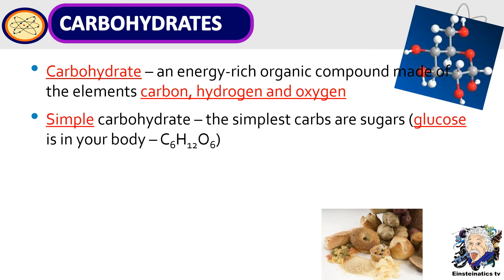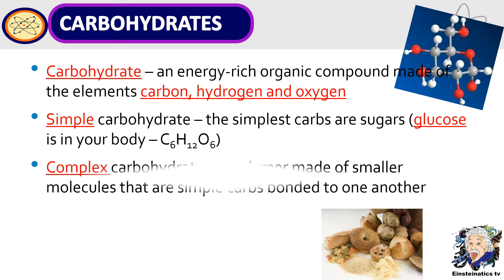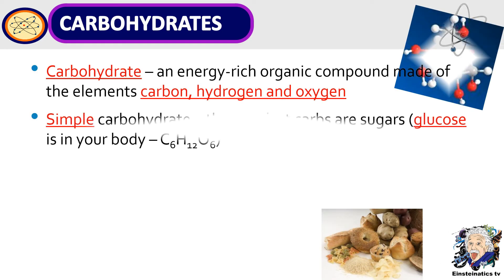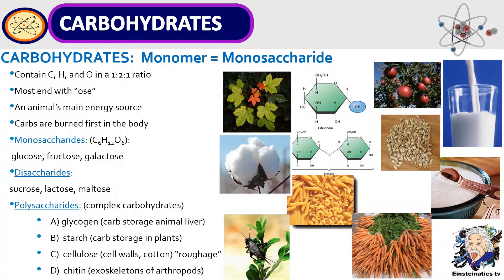Simple carbohydrates are the simplest carbs — sugars, which include glucose in our body. Complex carbohydrates are polymers made up of smaller simple carb molecules bonded to one another. Carbohydrates contain carbon, hydrogen, and oxygen. You can identify carbohydrates because their names end in -ose. Carbohydrates are the animal's main energy source and are burned first in the body. There are three classifications: monosaccharides, disaccharides, and polysaccharides.